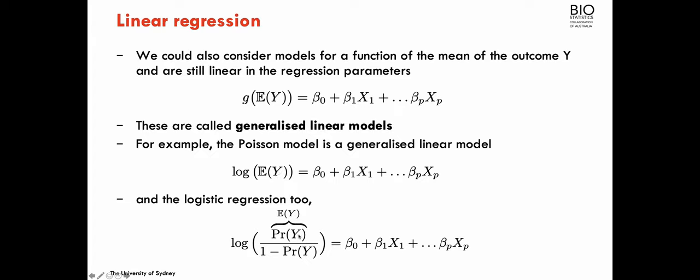Or if y, for example, is binary, and I use this transformation of the expectation of y. So remember, if y is binary, the expectation of y is the probability of y. So the probability over 1 minus probability, so the odds, and then I do the logarithm of that, and if I express this as a linear function of the covariates x, this too is a generalized linear model, which we usually call logistic regression.